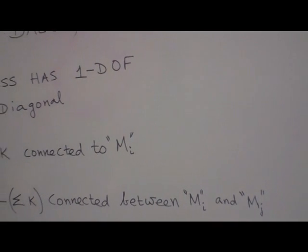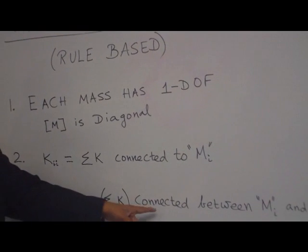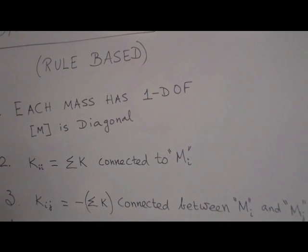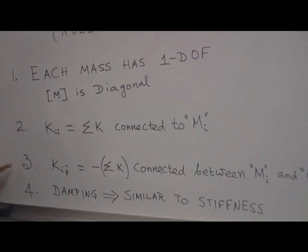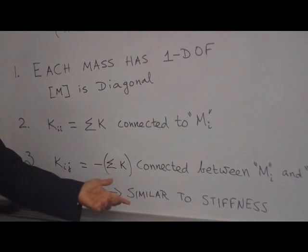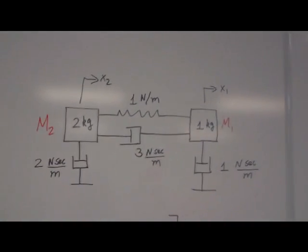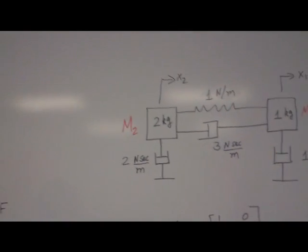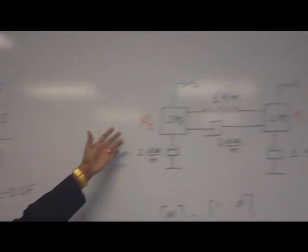For example, K12 equal to sum of all the stiffness connected to M1 and M2. And for damping, it's very similar to stiffness. Rule number 2 and 3 is identically same for damping also. So now let us look at this system. This method limitation is, it applies to only simple linear systems with no coupling between the masses.